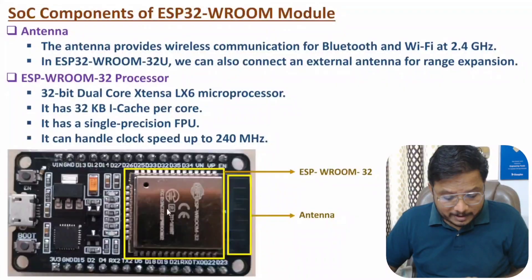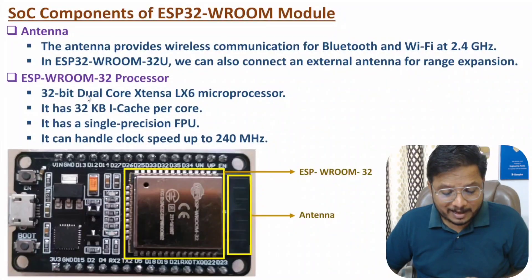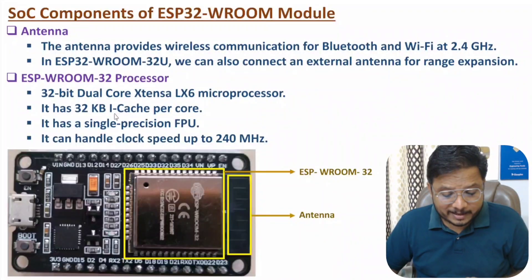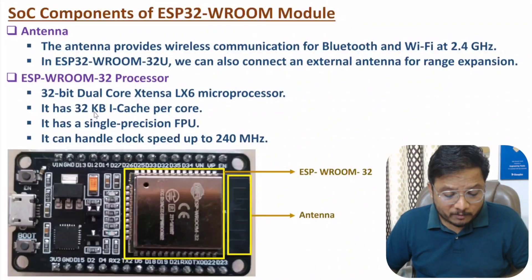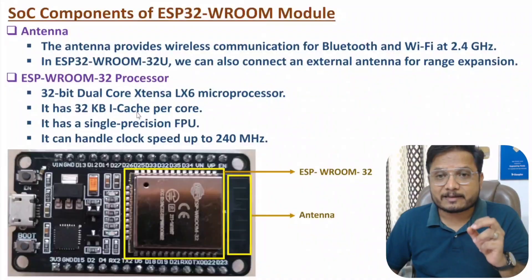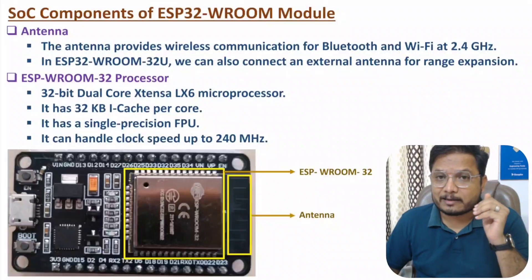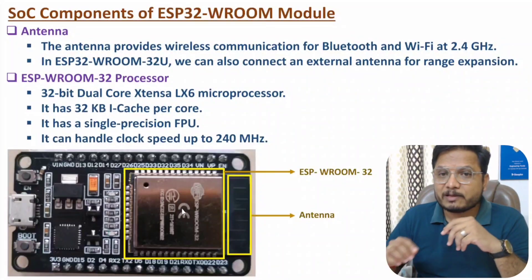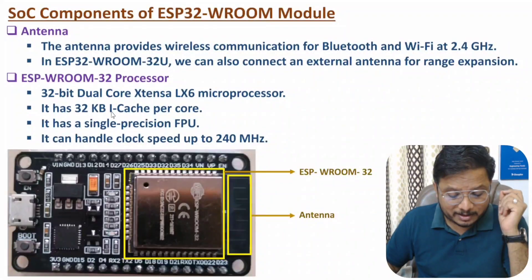The second SoC component is the processor. Inside this case, we have the ESP32 Vroom 32U processor. This processor is a dual-core 32-bit Xtensa LX6 processor. It has 32 KB of iCache per core — iCache means instruction cache. Cache memory is the fastest memory, integrated inside the processor, which results in faster execution of the program.